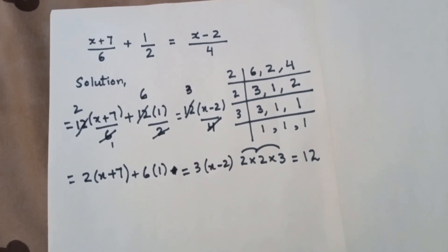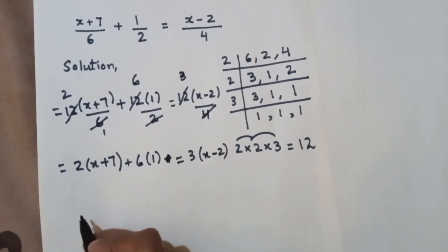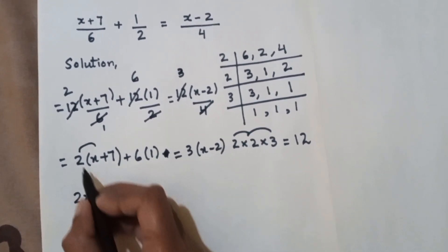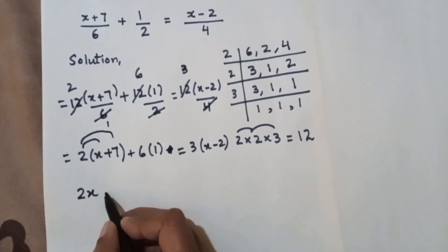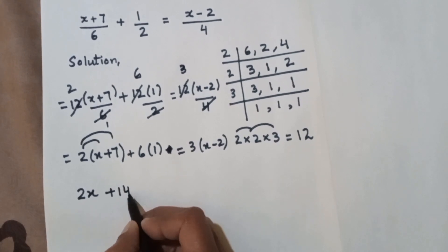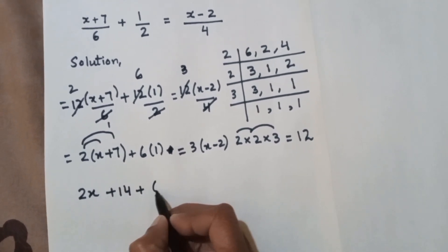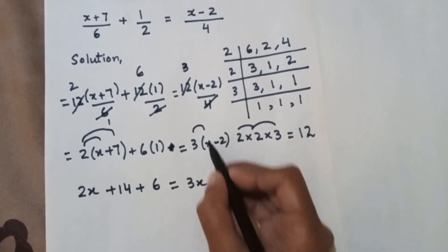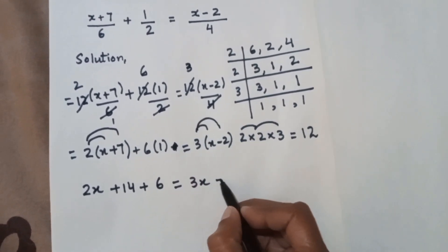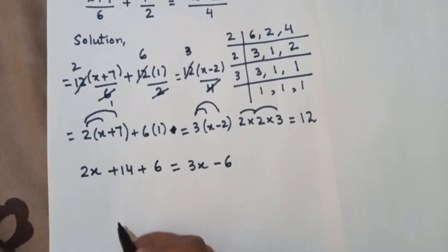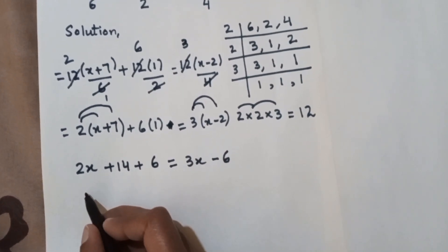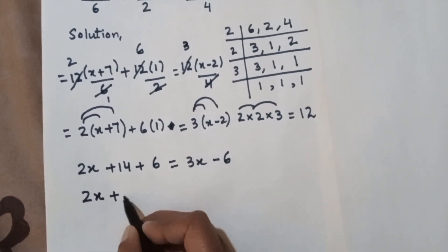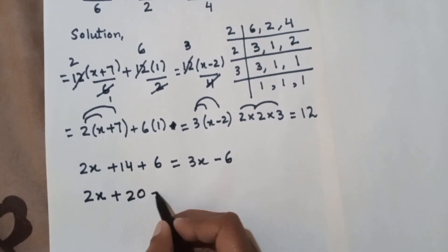Now I have to solve this and I will find the x value. Brackets mean multiply, 2 multiply by x is 2x, 2 multiply by 7 is 14. Then 6 times 1 plus 6 is equal to 3 multiply by x is 3x and 3 multiply by 2 minus 6. Now here 2x plus 20 is equal to 3x minus 6.